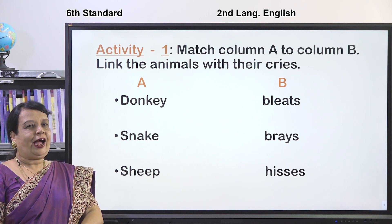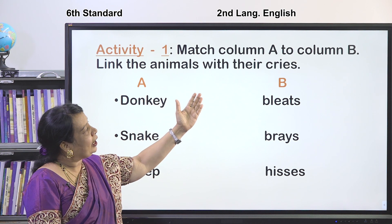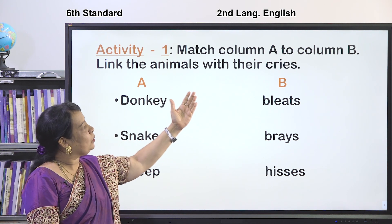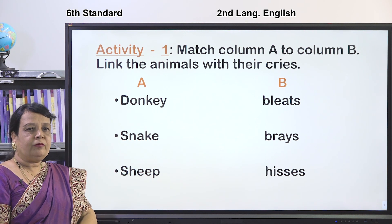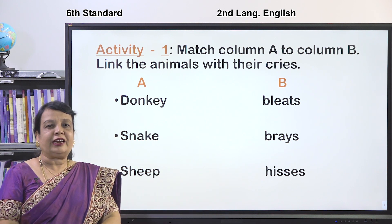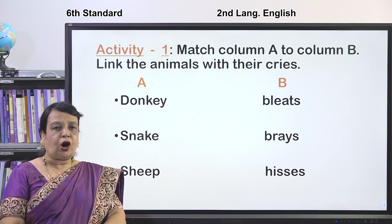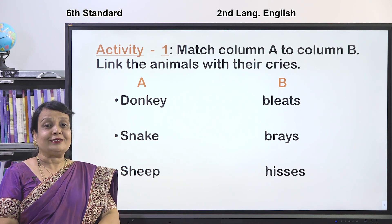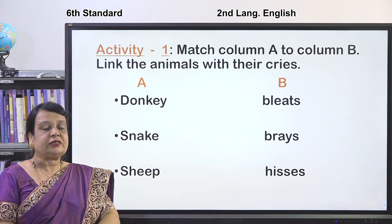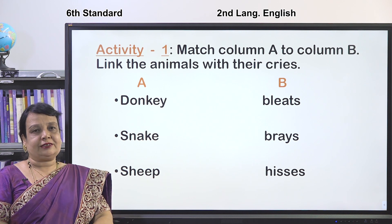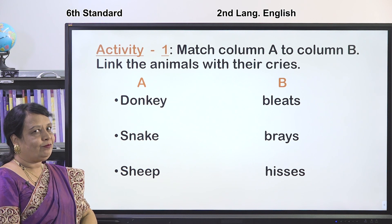Very good. Now I have Activity 1 for you. Match column A to column B — link the animals with their cries. On the A side I have animals; on the B side I have their sounds. For example, how does the dog make a sound? It is bow-bow, and it is called 'barks.' The dog barks. Like that, you are going to select from the words given.